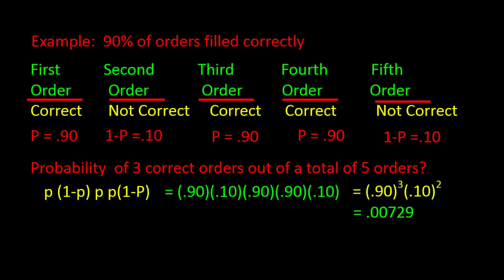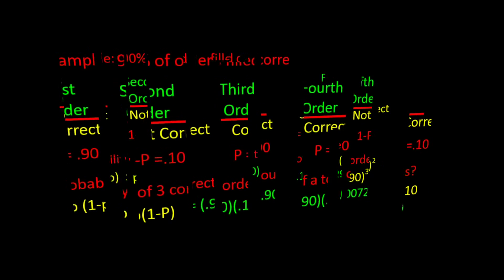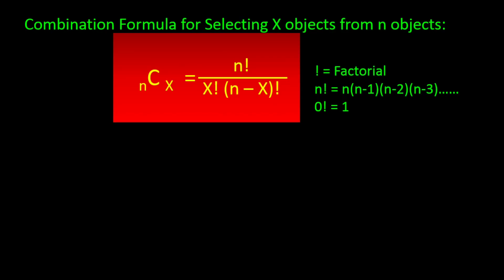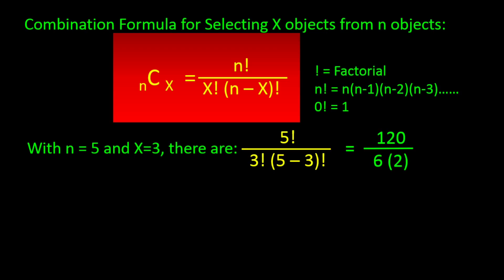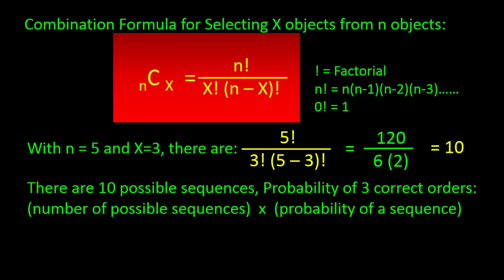To find the number of ways of selecting x objects out of n objects irrespective of the sequence, you would use the combination formula. The combination rule is: C(n, x) = n! / (x! × (n−x)!), where n is the total number of objects and x is the number of successes. So if we want how many ways we can have 3 successful orders out of 5, n = 5 and x = 3. We get 5! / (3! × 2!) = 120 / 12 = 10 possible sequences.